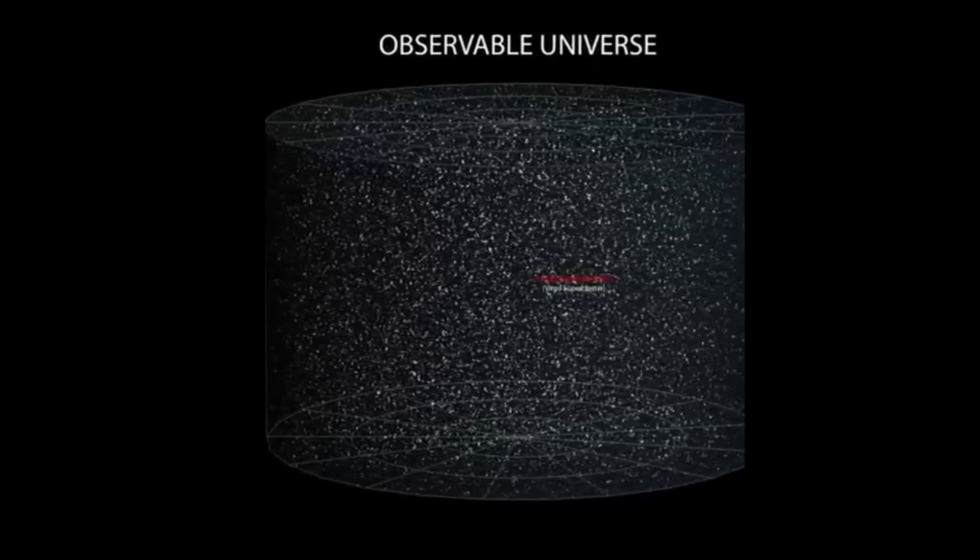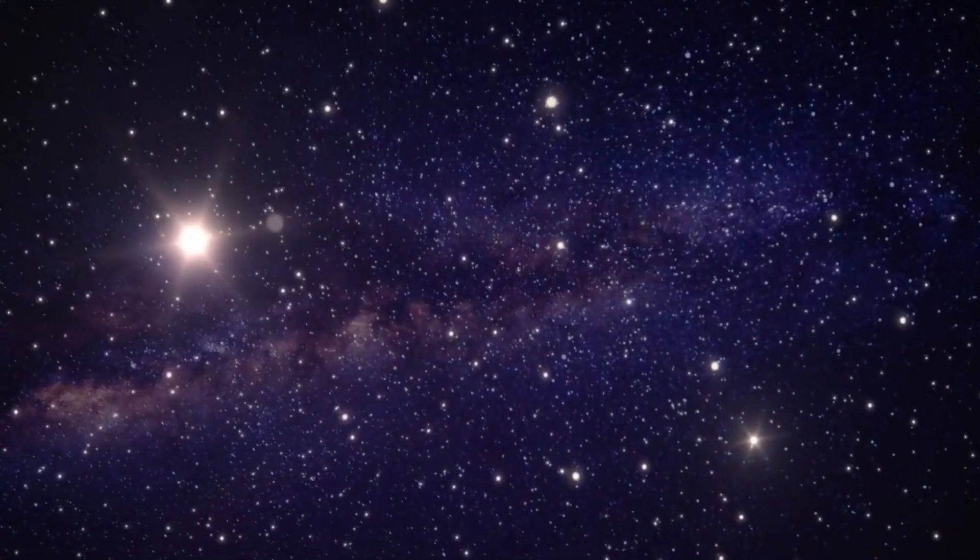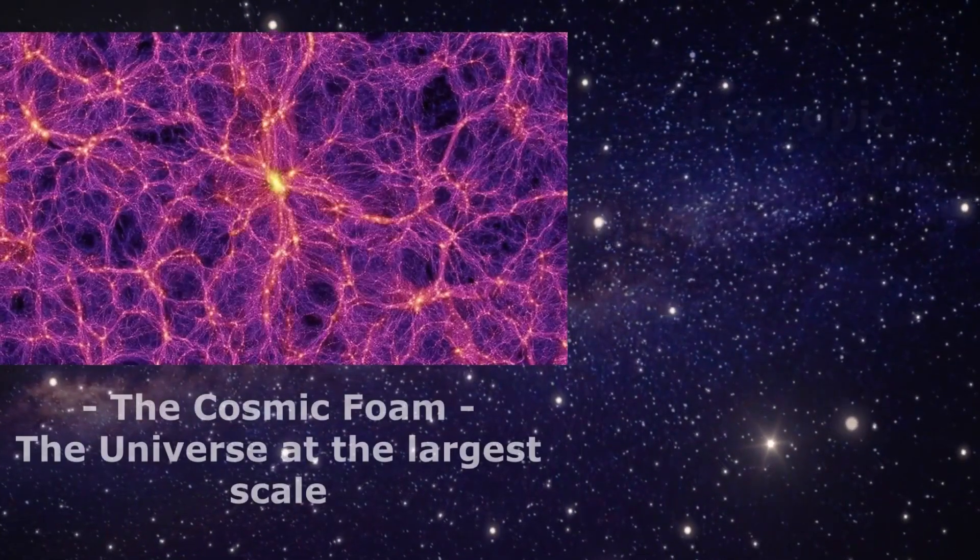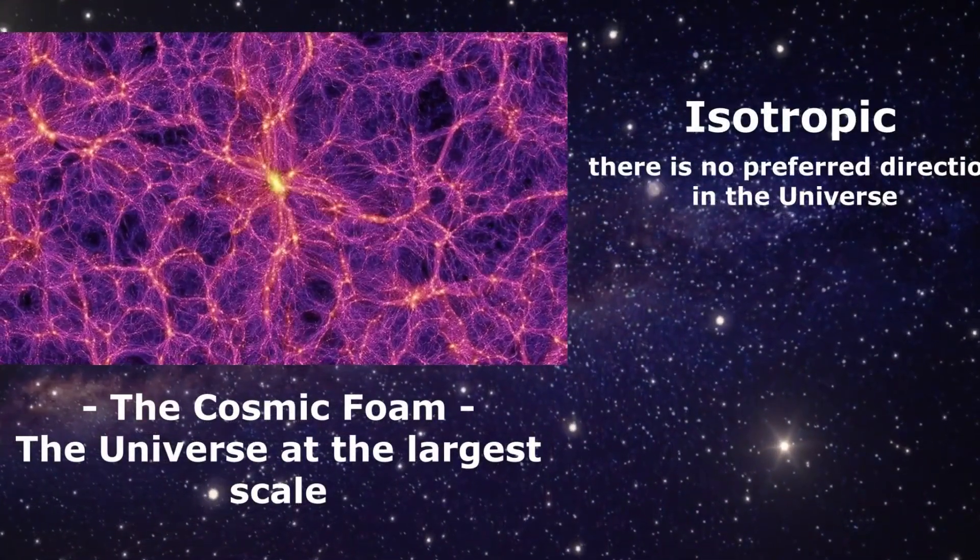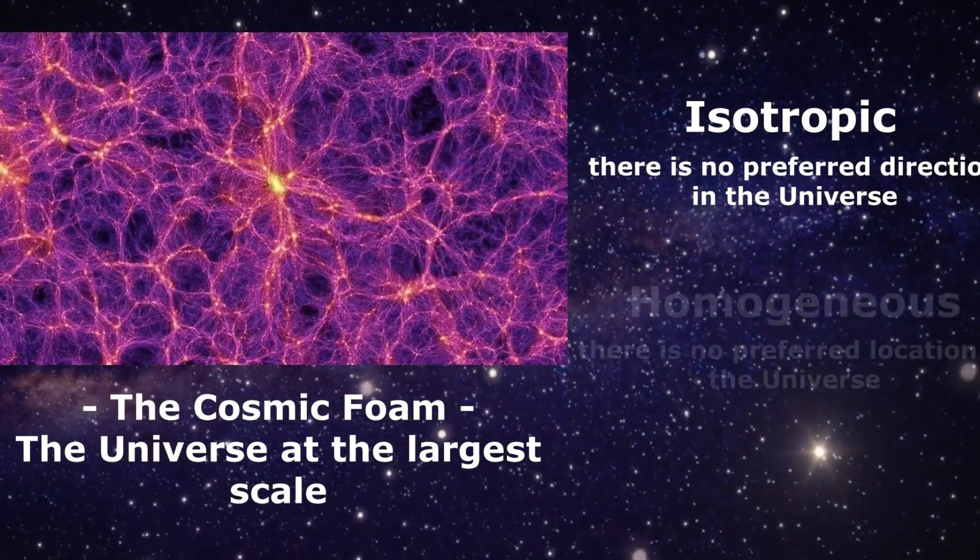According to cosmologists, what we observe has two crucial characteristics: it is isotropic and uniform. Isotropic means that it appears identical in any direction, and it is uniform if it appears identical at the largest scale.